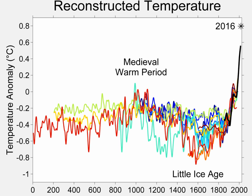Dendroclimatology is the science of determining past climates from trees, primarily from properties of the annual tree rings. Tree rings are wider when conditions favor growth, narrower when times are difficult. Other properties of the annual rings, such as maximum latewood density, have been shown to be better proxies than simple ring width. Using tree rings, scientists have estimated many local climates for hundreds to thousands of years previous.